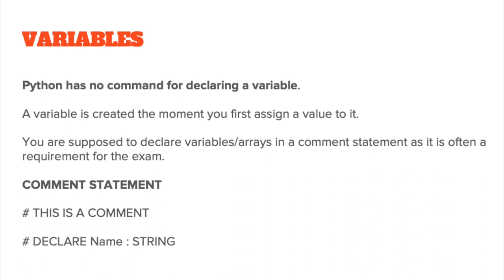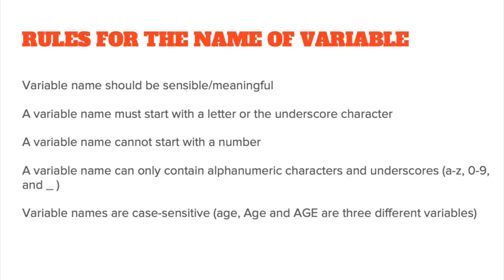However, the exam board still deals with some archaic programming languages like Java and Visual Basic, and you're supposed to declare variables in exam questions. To deal with that, for Python you can declare a variable using pseudocode in a comment statement. Just use the hash key and then declare the variable name as a data type. Variable names need to be defined in a sensible and meaningful way — we can't just randomly choose any letters because it doesn't mean anything to someone reading the code.